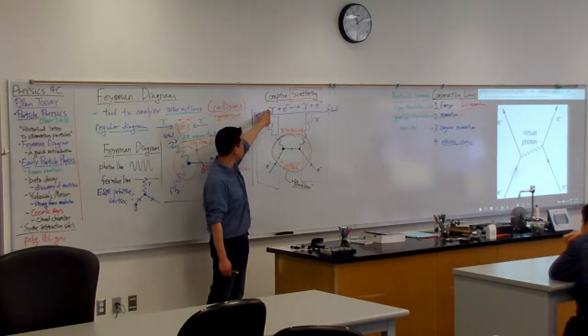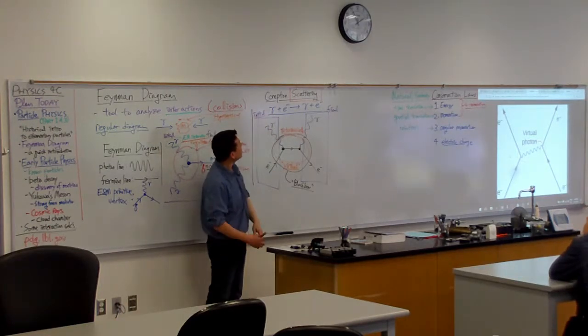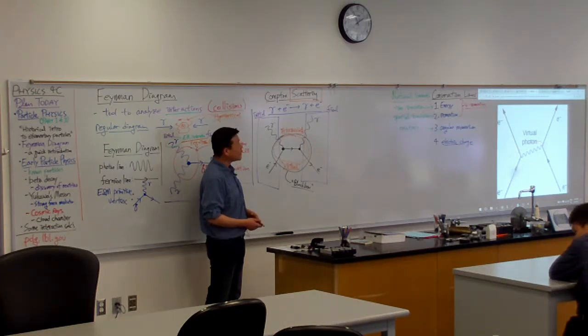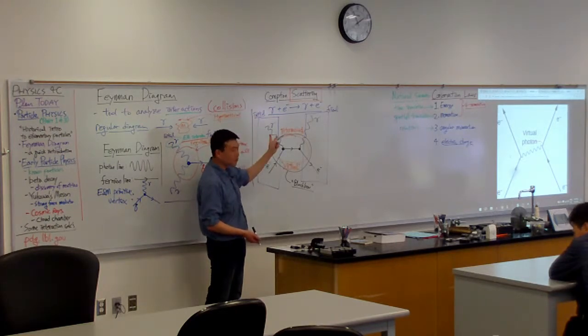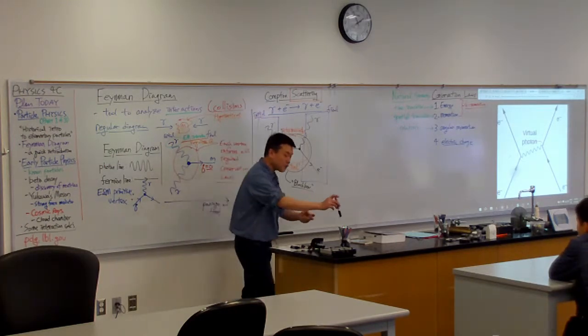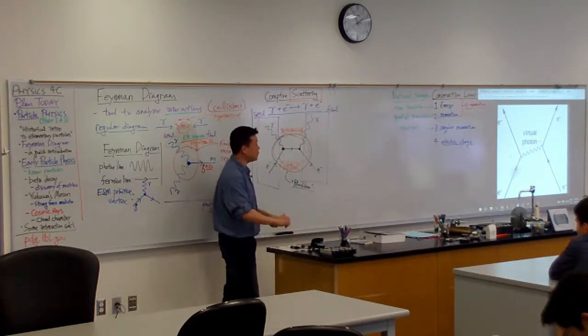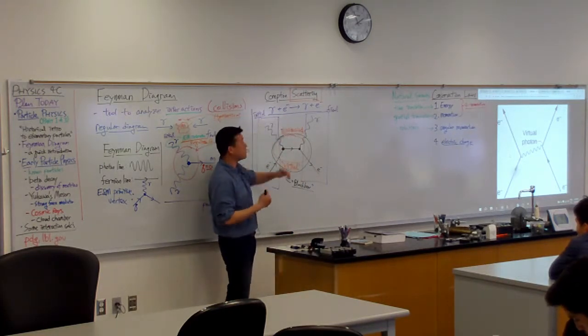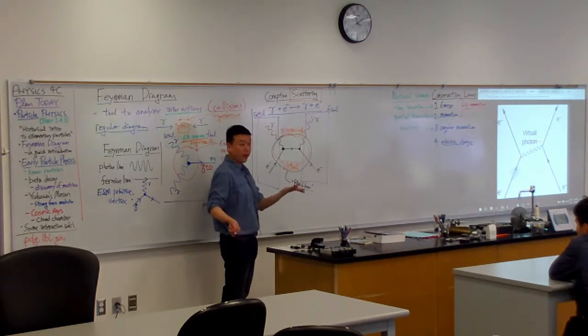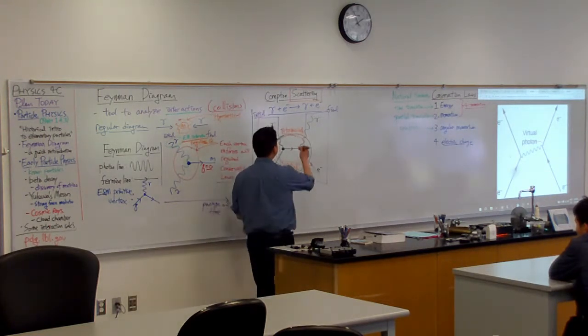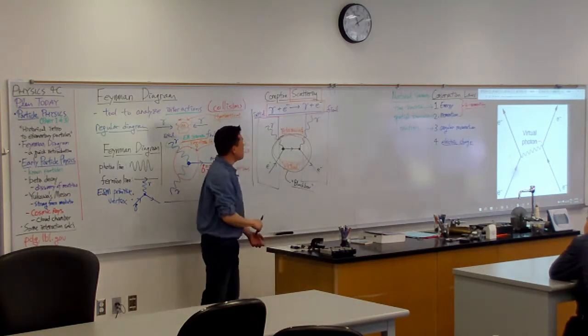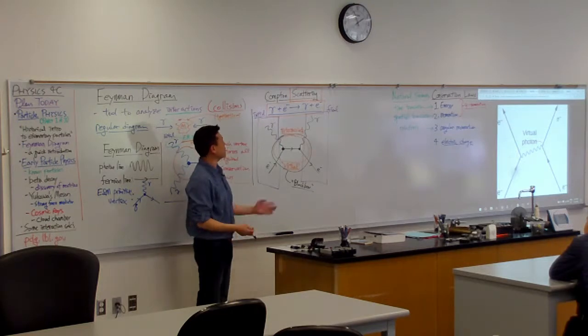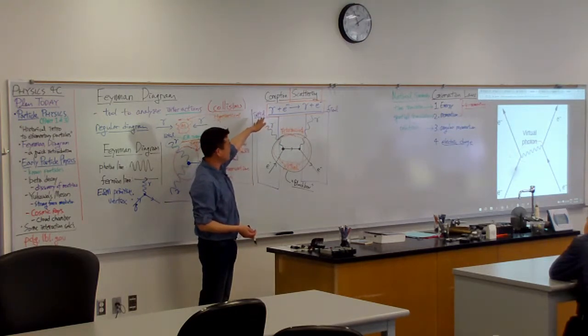So you have this Compton scattering, right? And I can use this to get at least two more processes and maybe a third. Let's at least do two more. So for those of you who have taken chemistry, this is what I want you to think of this as. This is kind of written like a chemical reaction equation, right? So if this actually were chemical reaction equation, what kind of transformation can you do to the equation to get related processes?